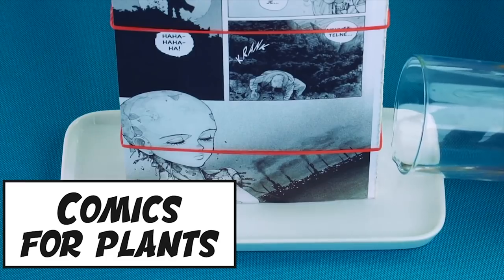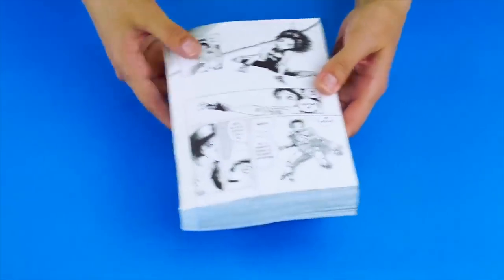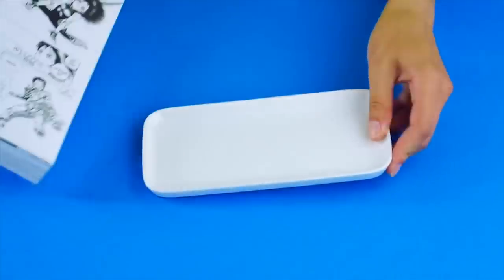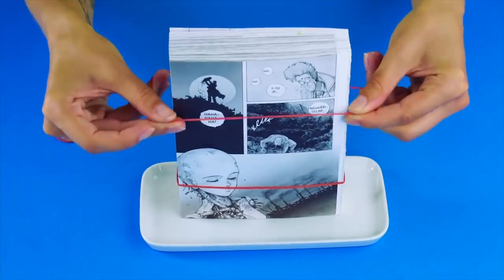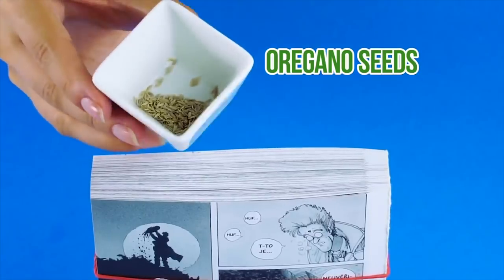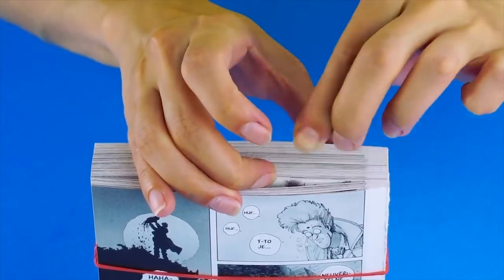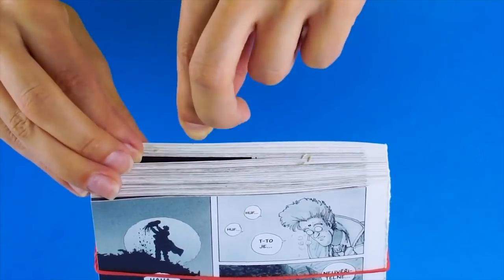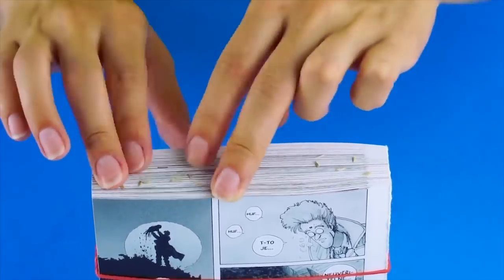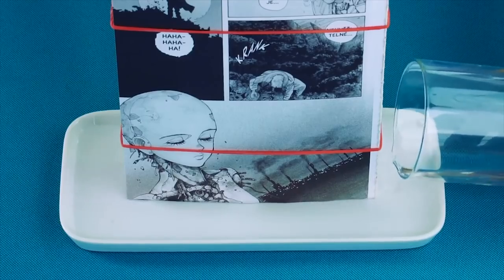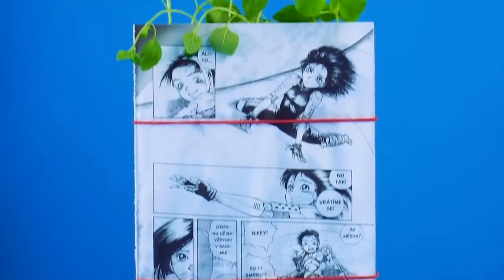Comics for plants. Did you know you can use comics to grow plants? Grab an old comic book and a small tray. Set the comic book onto the tray in the upright position. Secure it with a rubber band and grab some seeds. We chose oregano seeds, but feel free to choose whatever seeds you like. Put the seeds between the pages of the book. Pour water onto the tray and on top of the book. The seeds will sprout right out of the pages. Now a plant's growing out of the top.